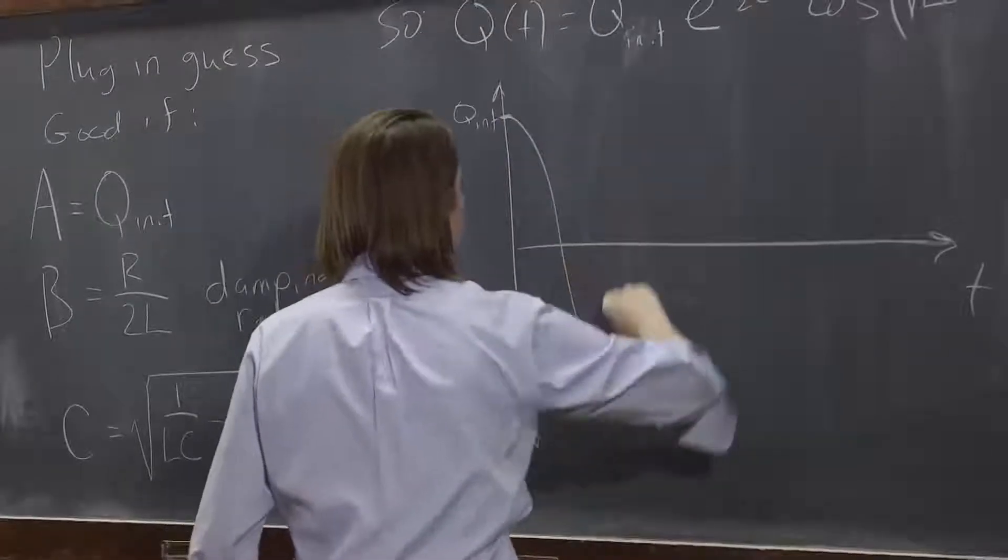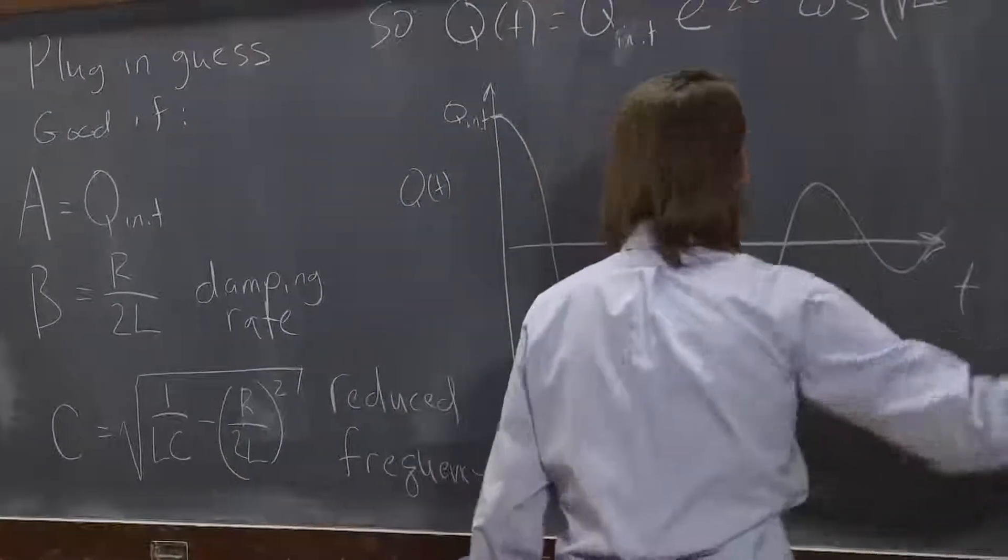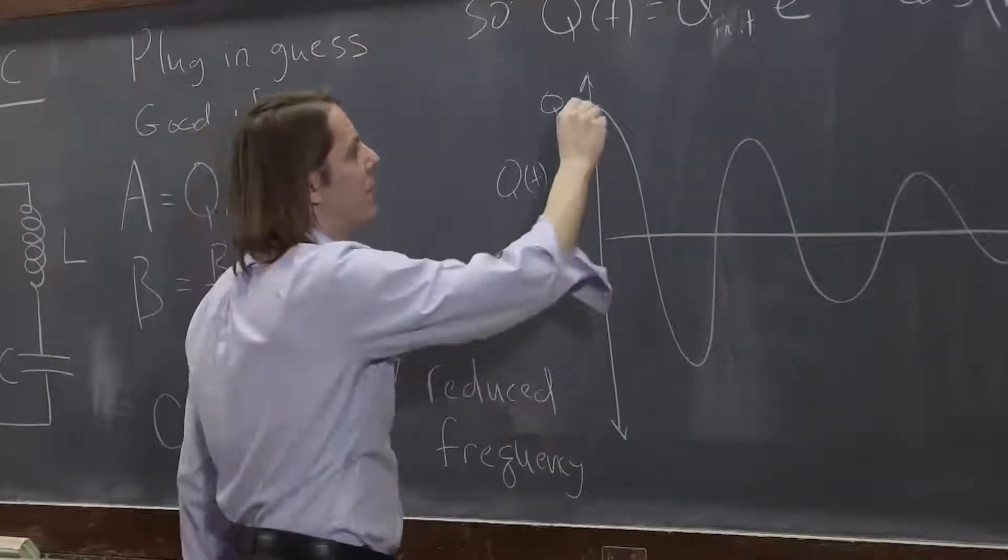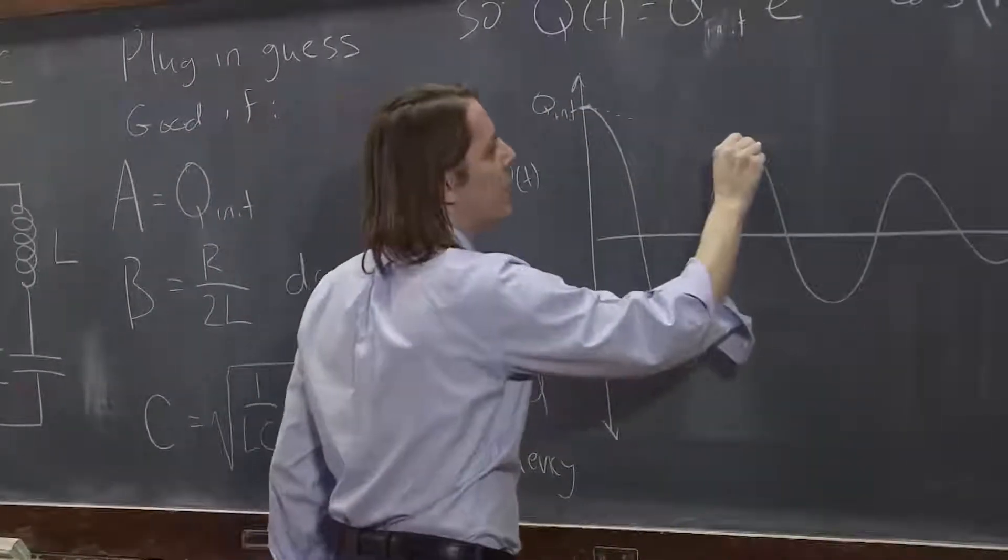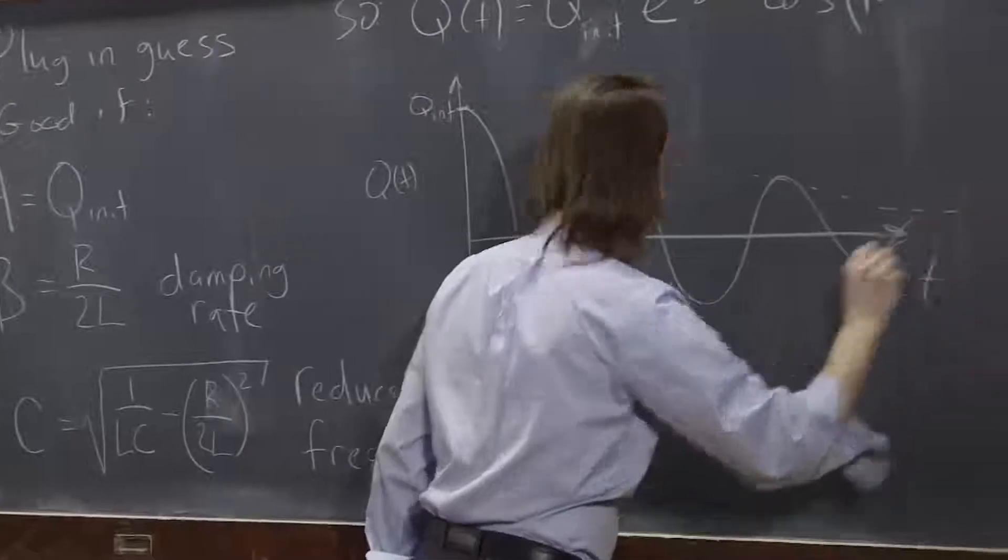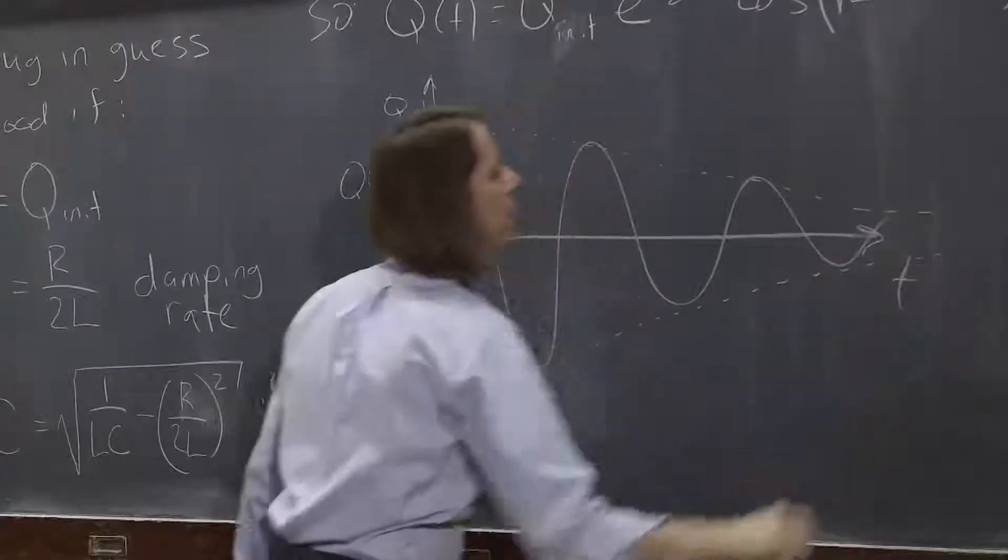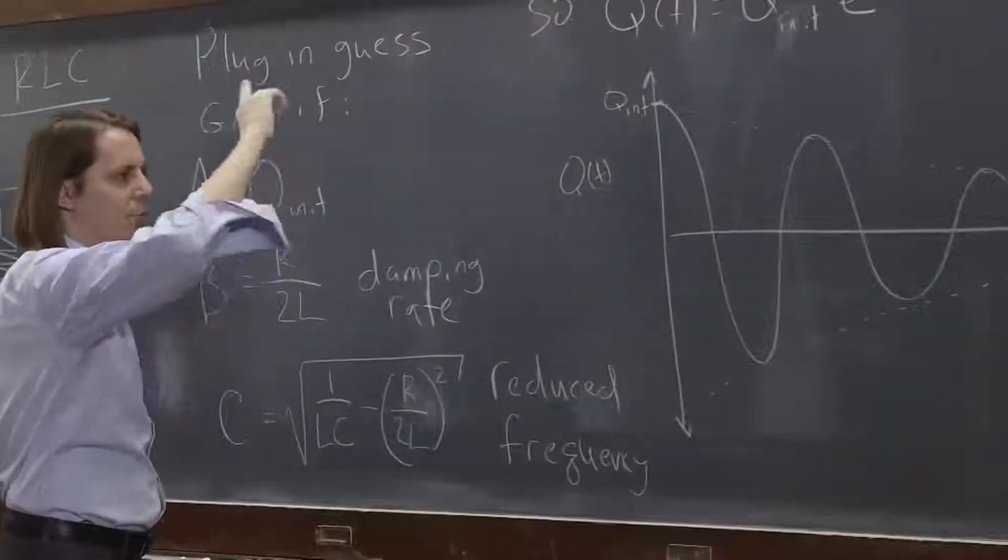So it's going to do something like this, like that. So you can see the oscillation very clearly. That's the cosine.